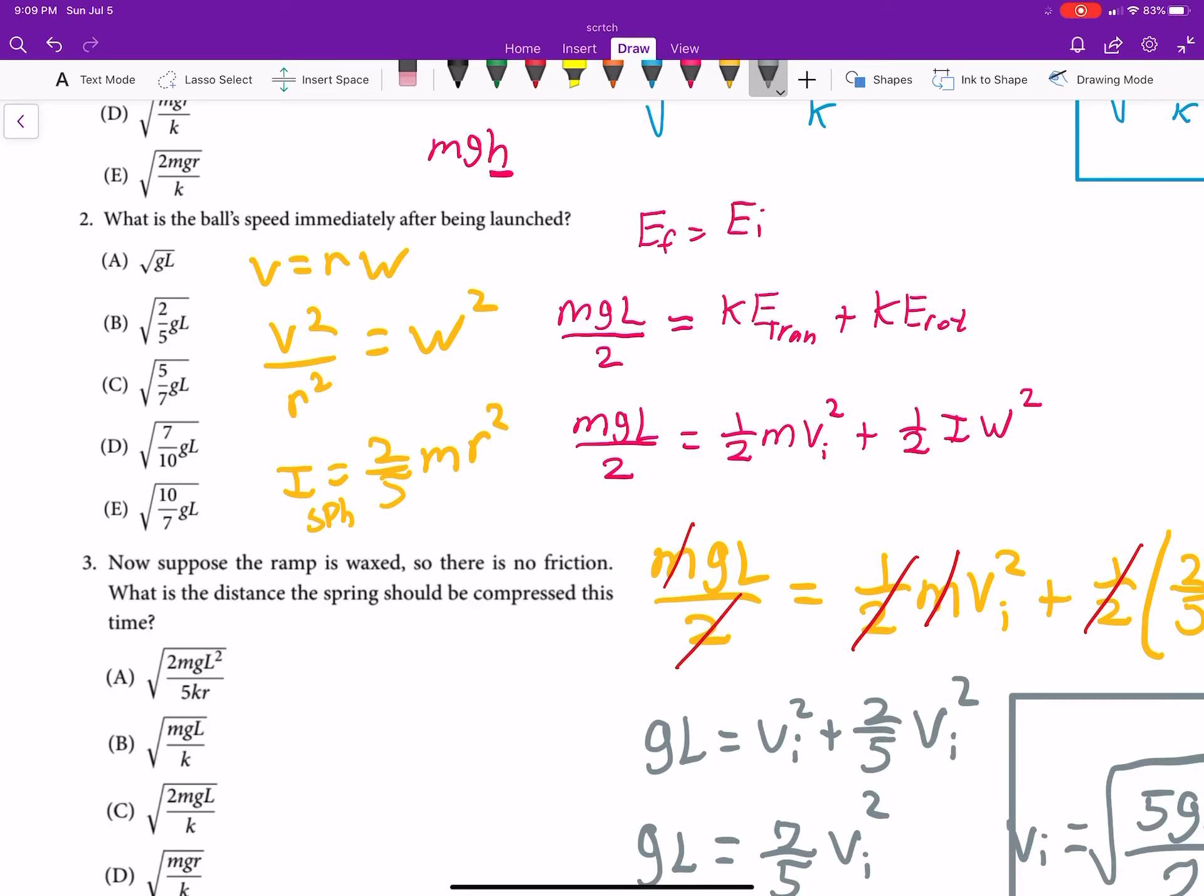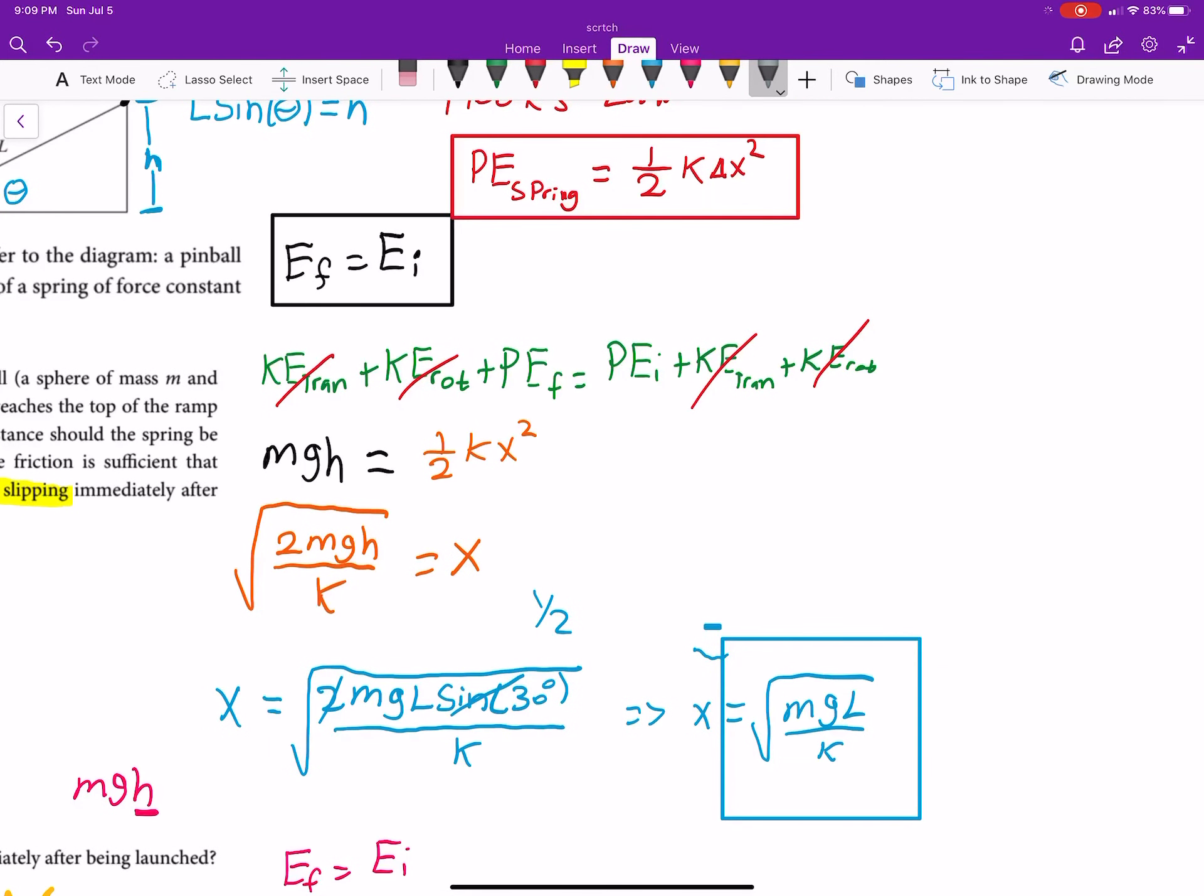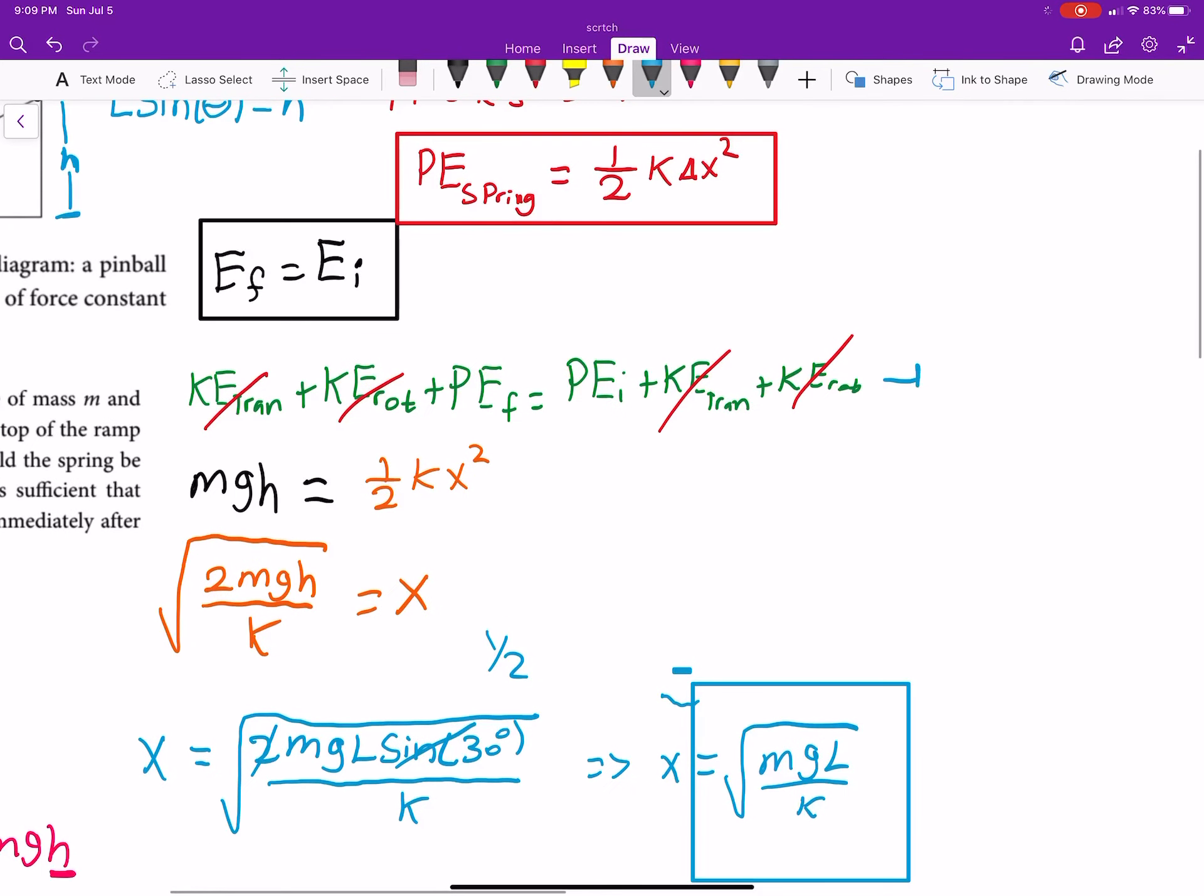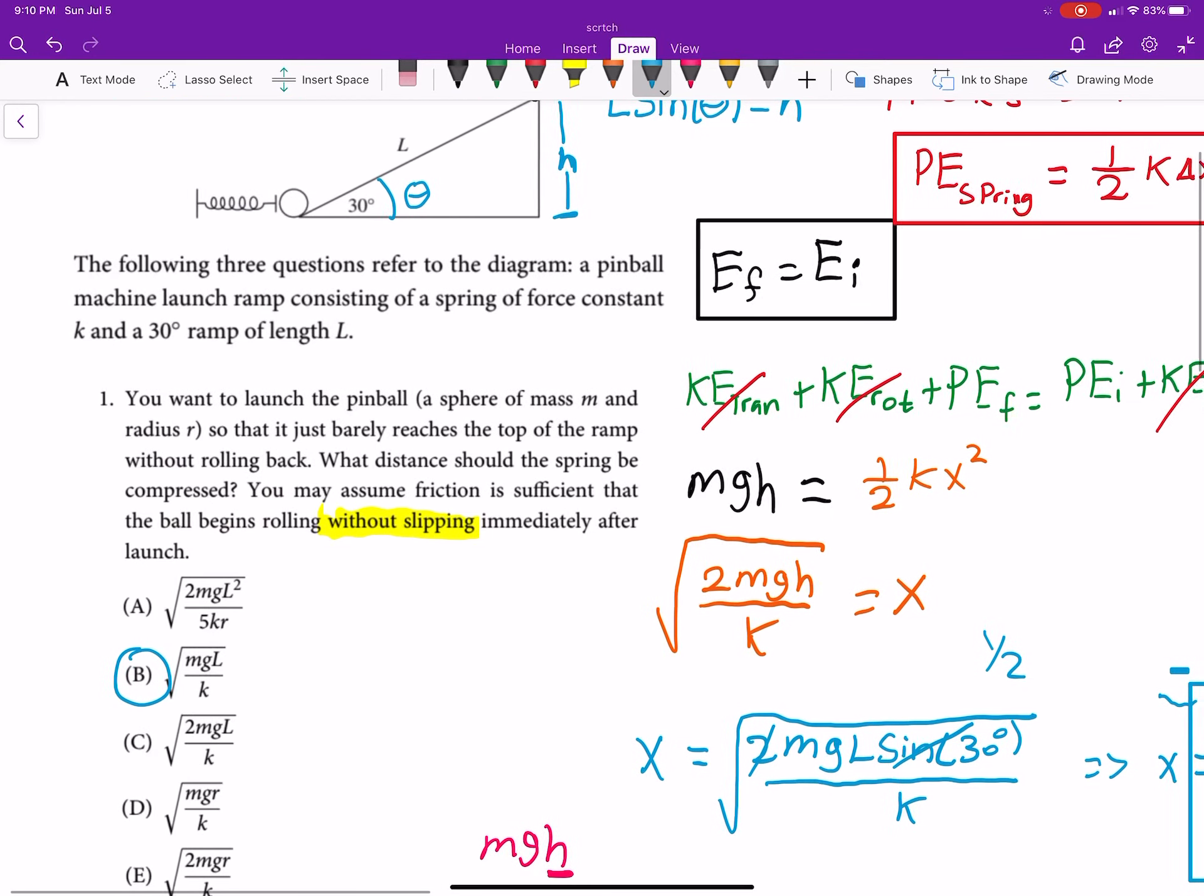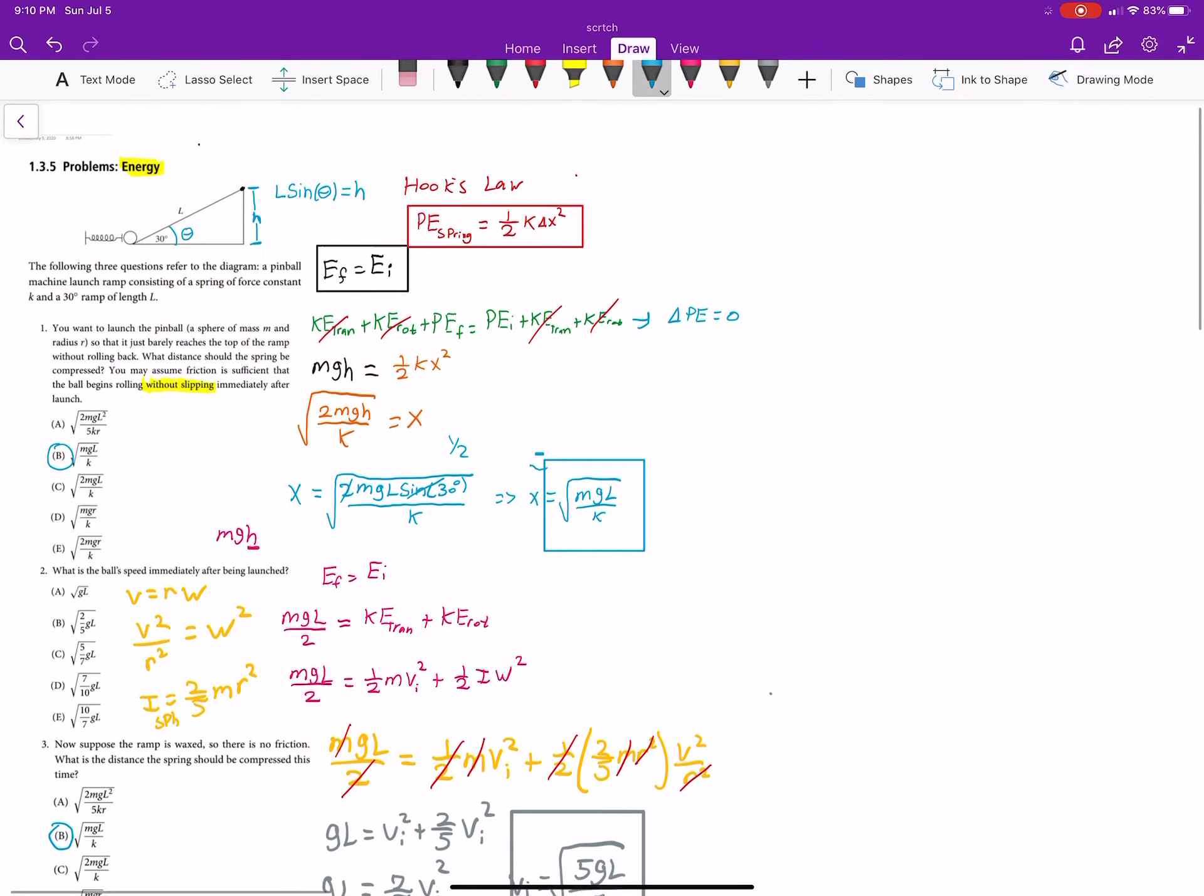Now, this is going to be no different than part A because in part A, when we did our kinetic energy, our energy equation, we saw that really, the change in potential energy was zero if we were to move potential energy initial over. In other words, kinetic energy had no role to play in this part of the question. It was just potential energy. Those will still go to zero here. Even though it would change how you would look at it, they still go to zero. So, you can still say that it's going to be mgl over k square root. That won't change because the only thing that matters there is your potential energy.